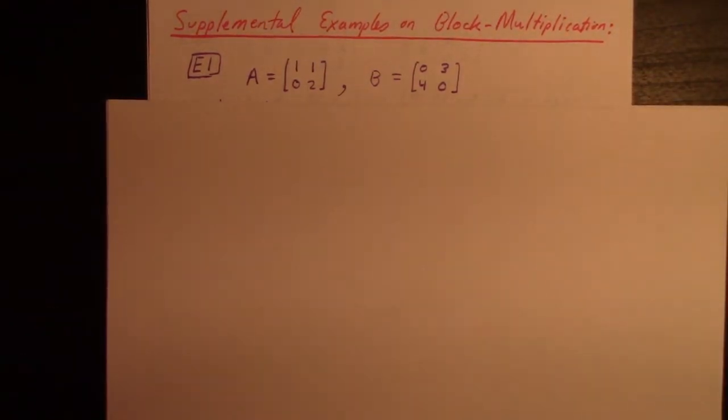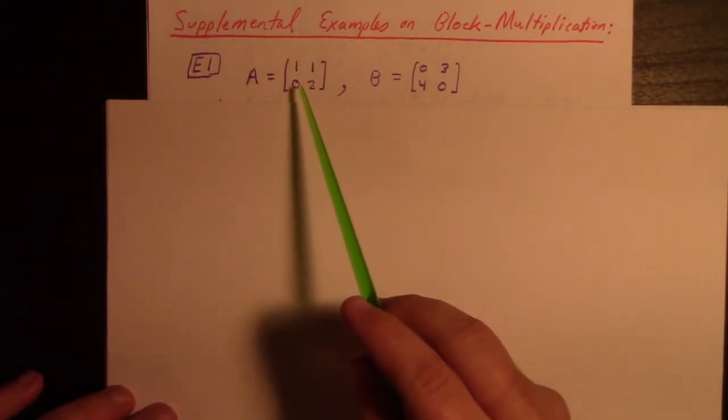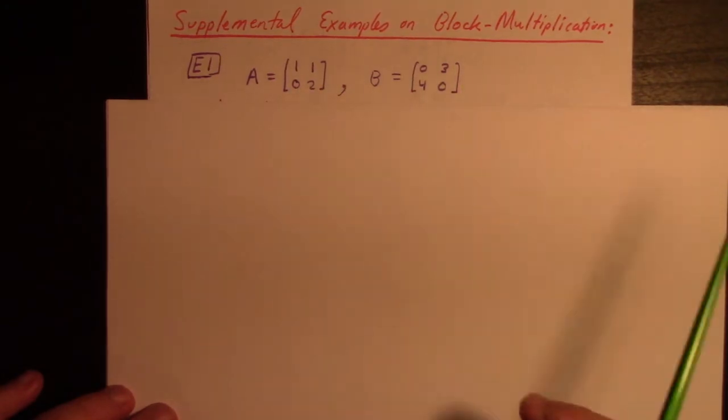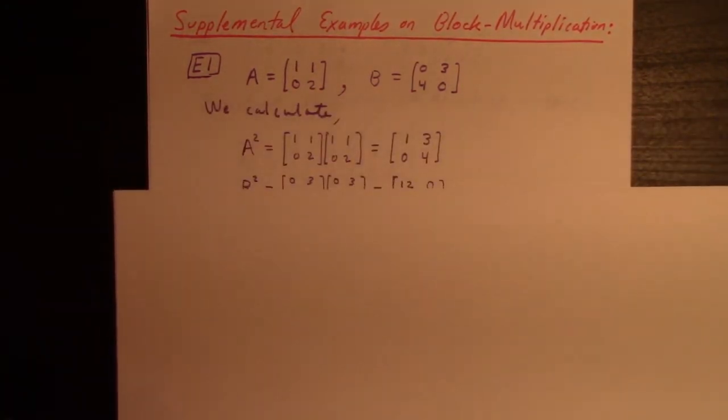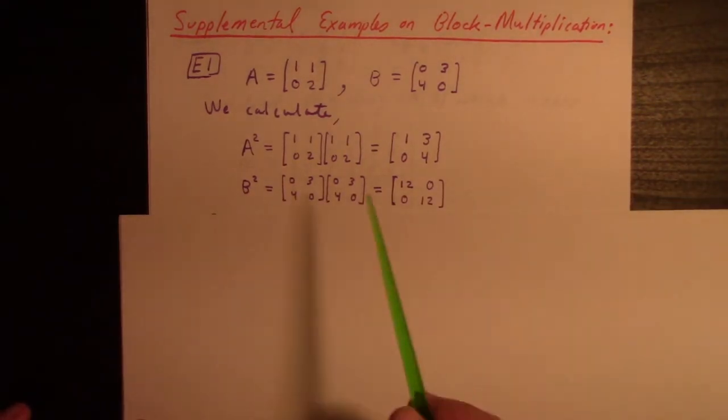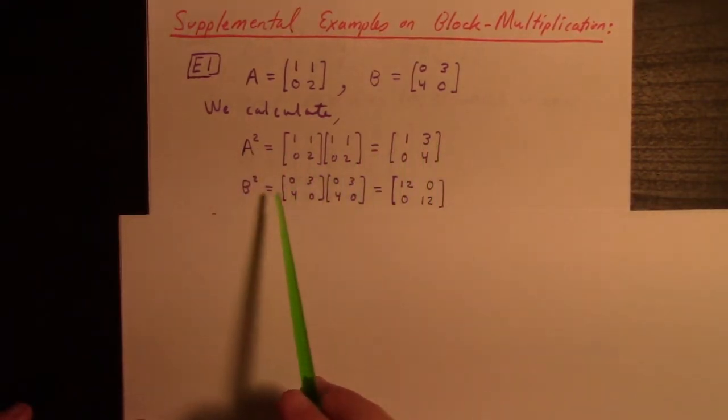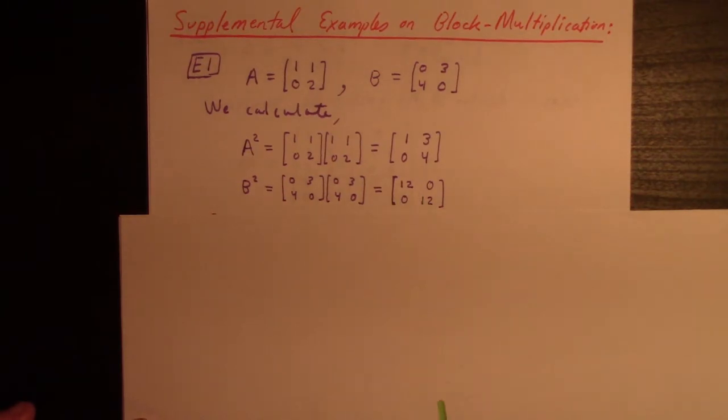Let me add this short video to help you with block multiplication. Suppose we have A equals this and B equals that. I want to form a block matrix with these, but first I want to calculate the squares. A squared is this and B squared is that. You can check that.